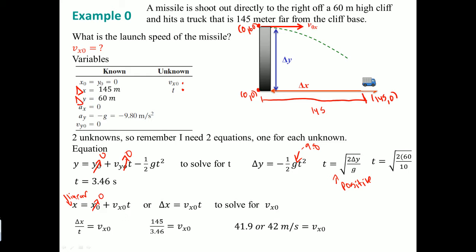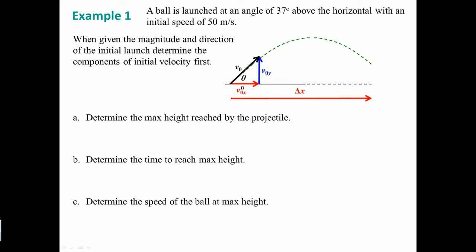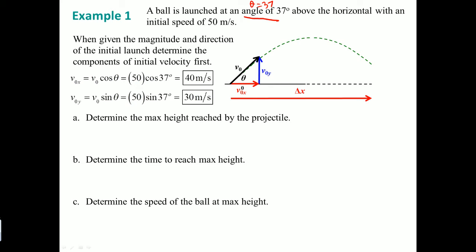Next, example one: a ball is launched at 37 degrees above the horizontal with an initial speed of 50 m/s. You are asked to determine three things. When given an angle, you must first compute the velocity component parts. The velocity in the x-direction is 40 m/s and in the y-direction is 30 m/s. These components are crucial because all the kinematic equations depend on direction.